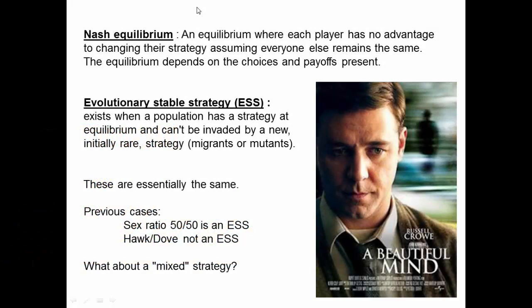In the previous lecture we saw a case of an equilibrium between hawks and doves, and also a case of an equilibrium between males and females. There are a couple of technical terms for these sorts of equilibria in game theory. A Nash equilibrium, named after Nash, is an equilibrium where each player has no advantage to changing their strategy assuming everyone else remains the same. This equilibrium depends on the choices and payoffs present.